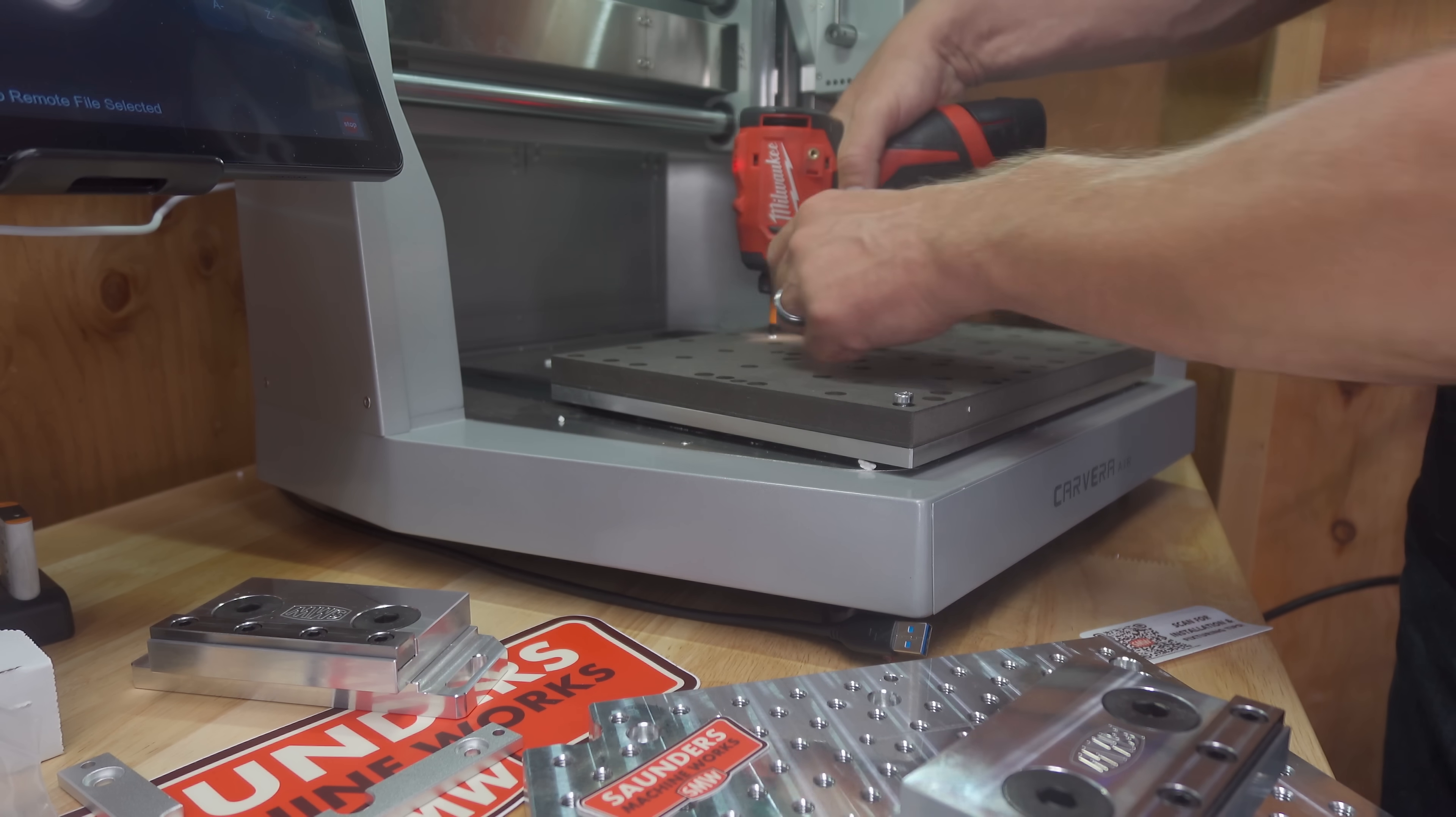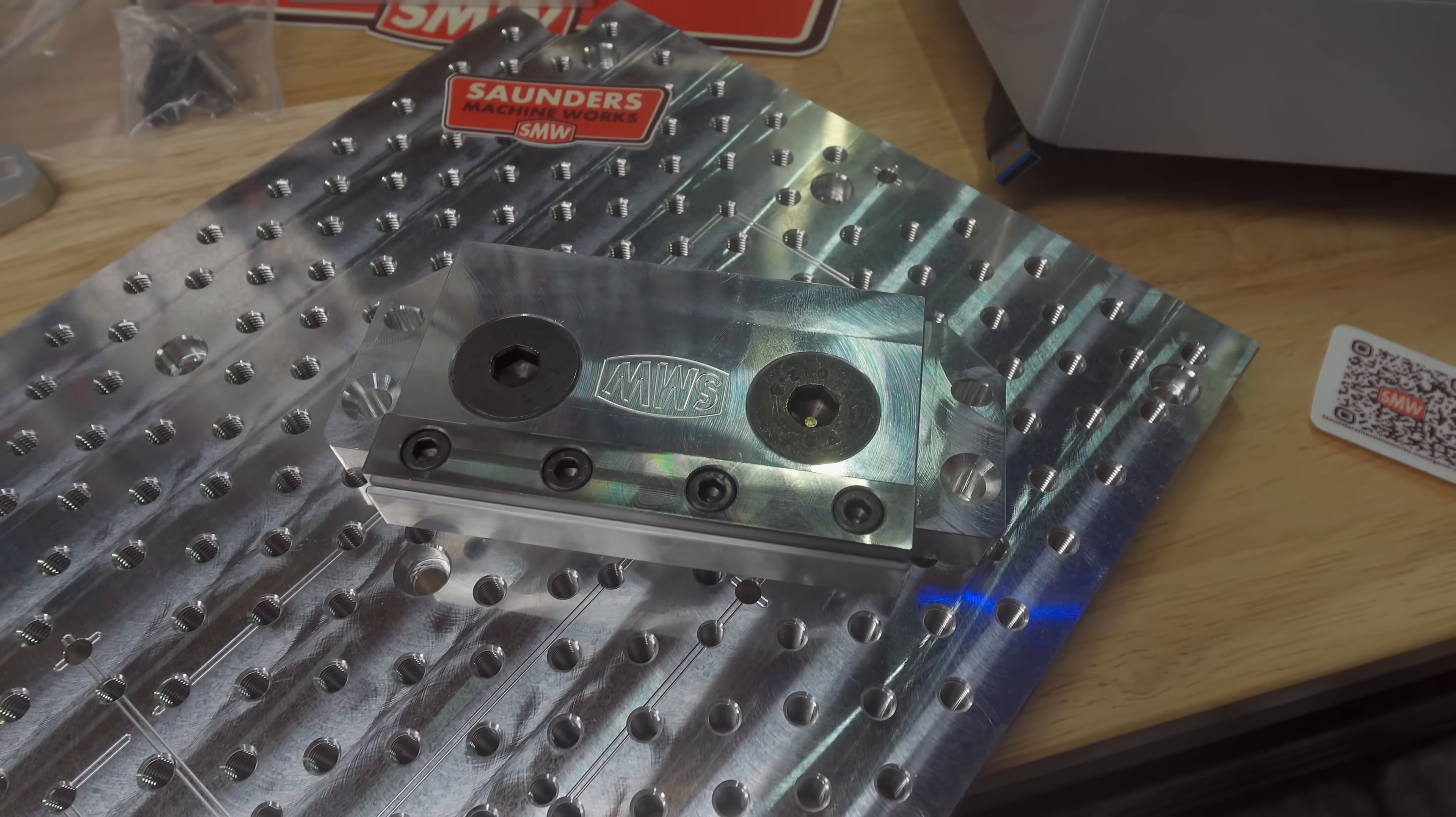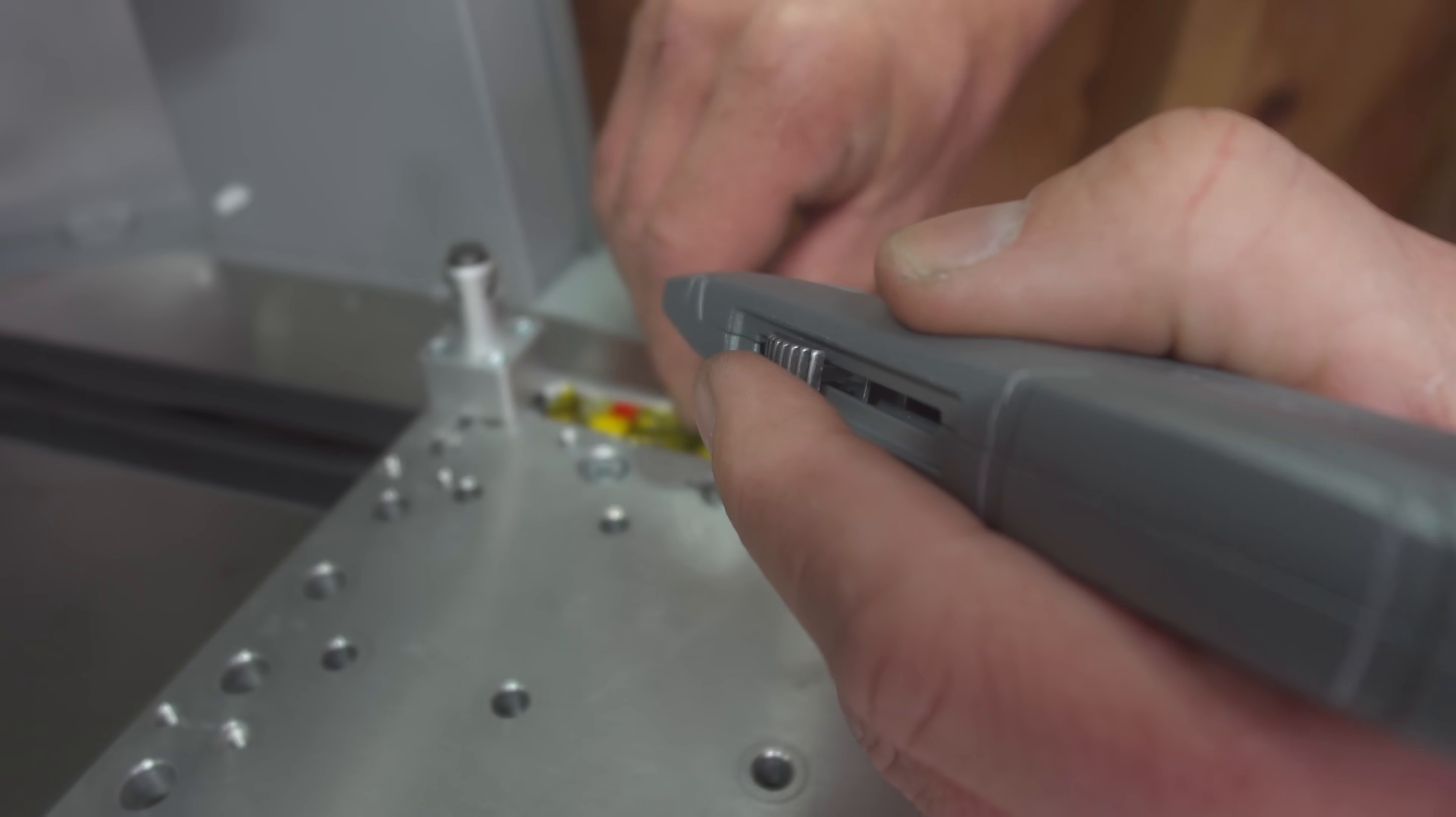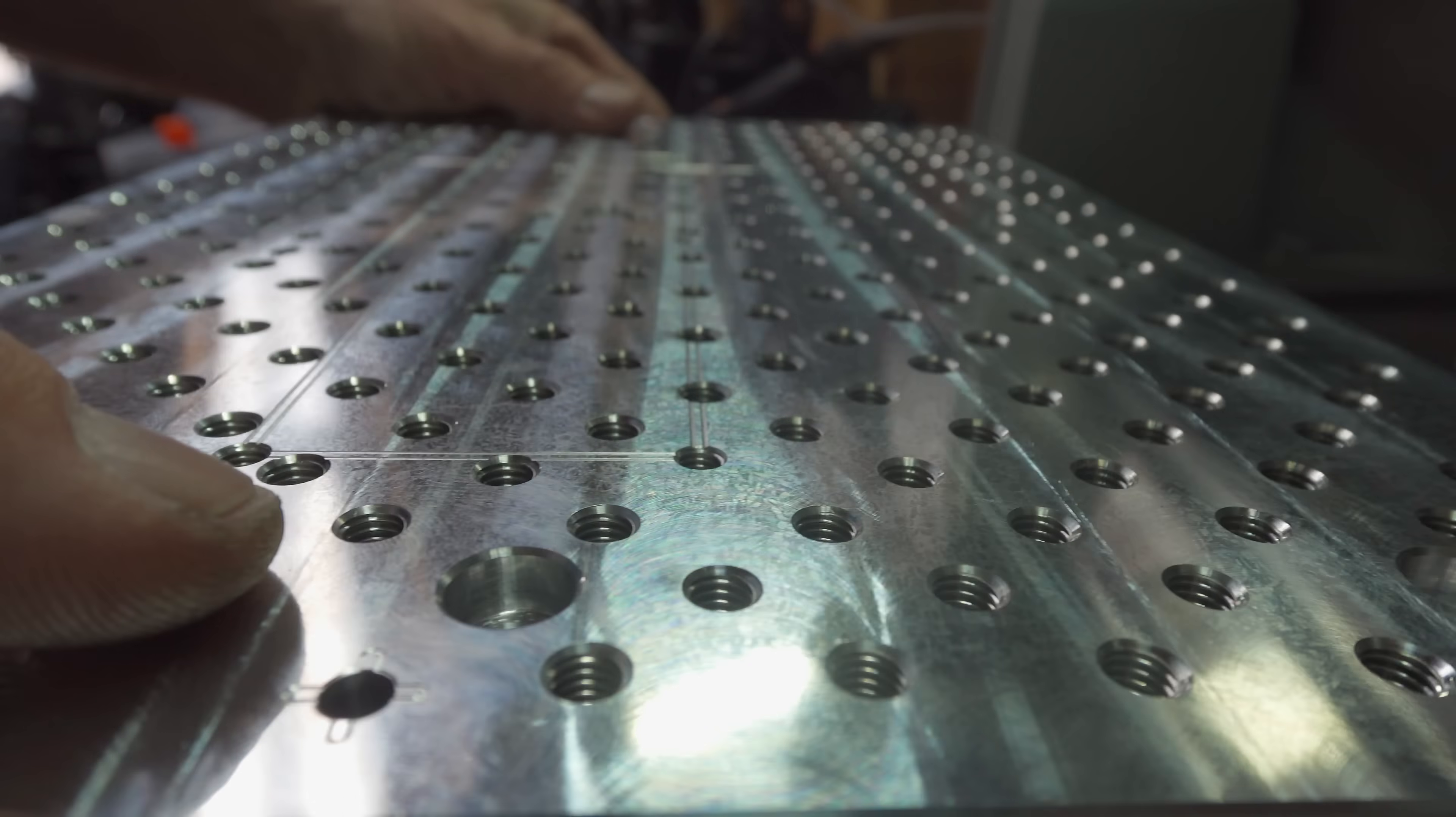For this, I installed this absolute unit of a fixture plate from Saunders Machine Works. It's a 17.8mm thick piece of precision machined aluminum that features an array of M6 threaded holes on 20mm centers to choose from. It's also available in quarter-20 threads if you're into that sort of thing.